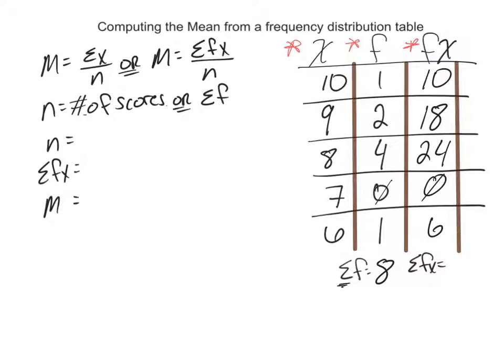Now your n, your symbol for n, that's your number of people in your study, or if you want to think of it like sum of f, that's okay too. So n equals your sum of f, or in this case 8.